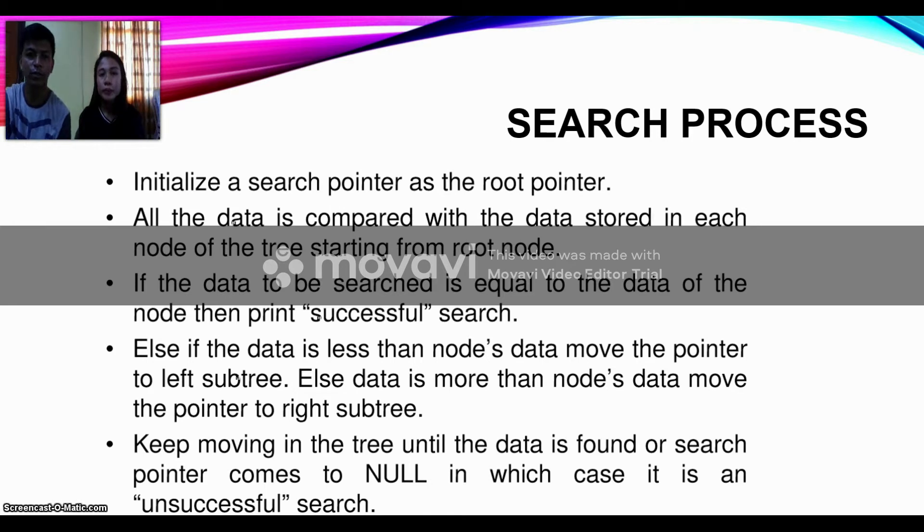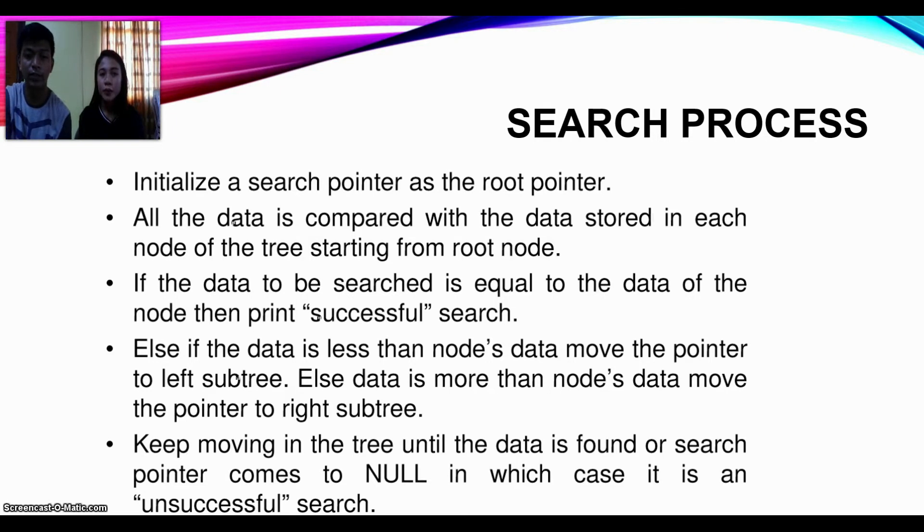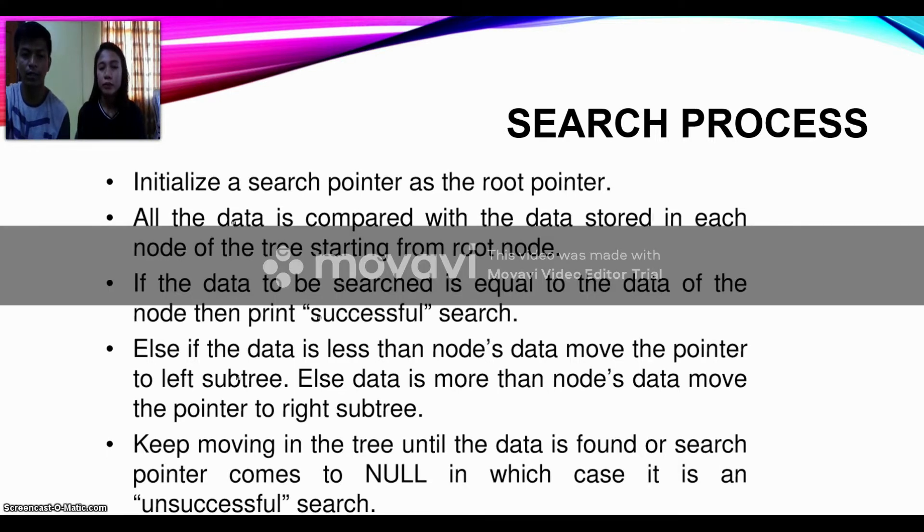Search process: Initialize a search pointer as a root pointer. All the data is compared with the data stored in each node of the tree starting from the root node. If the data to be searched is equal to the data of the node, then it's a successful search. Else, if the data is less than the node's data, move the pointer to the left subtree. If the data is more than the node's data, move the pointer to the right subtree.